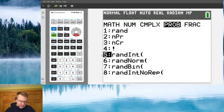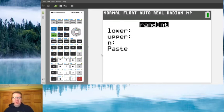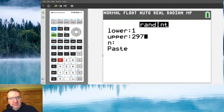So we need to pick five random numbers between 1 and 297. So when we do that, we're going to say, all right, go to probability, we're going to go to random number integer. And when you do this, you're going to end up going through, you need to have a lower number.